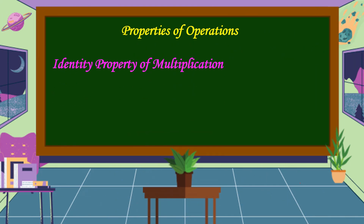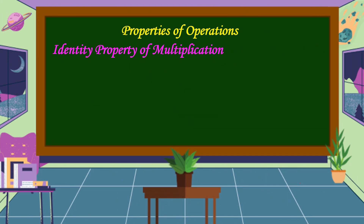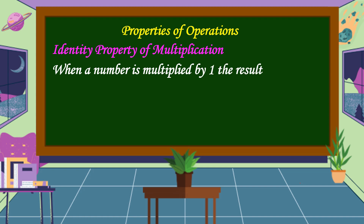The next property is the identity property of multiplication. This property states that when a number is multiplied by 1, the result is the number itself. For example, 16 times 1 is equal to 16. The identity element of multiplication is 1.